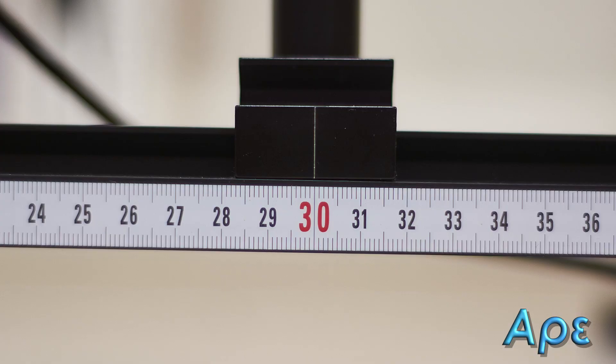To vary the distance between the GM tube and the source, an optical bench is used. This has measurements along the side and fiducial marks on the holders to allow for precise placement of the various components.